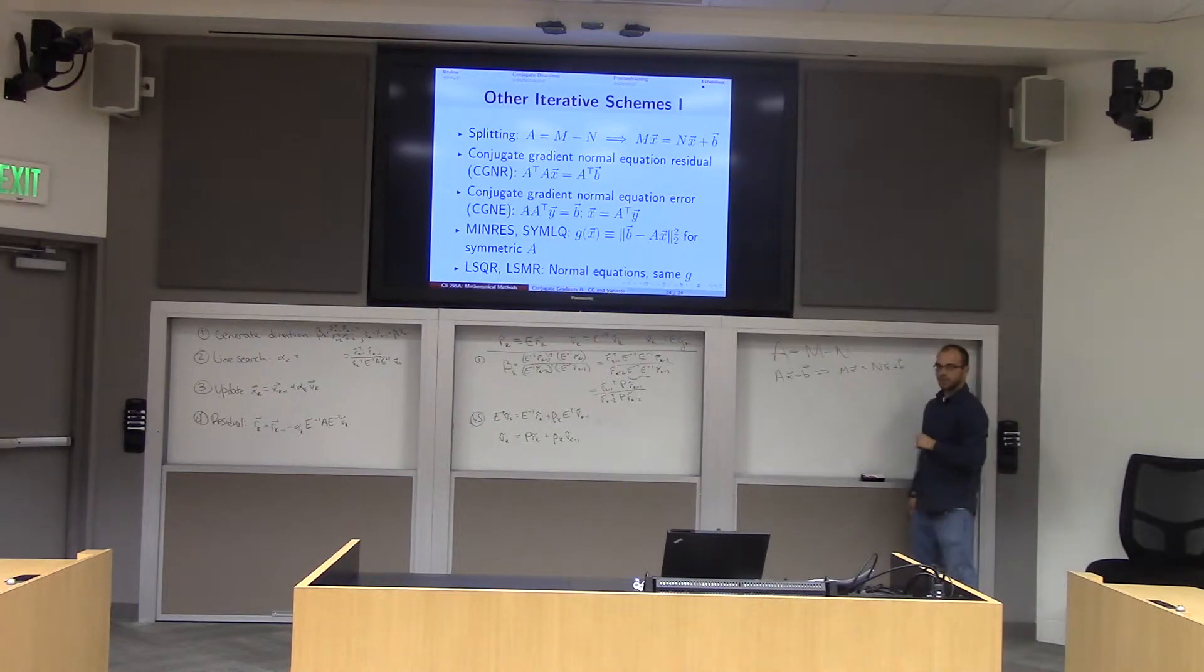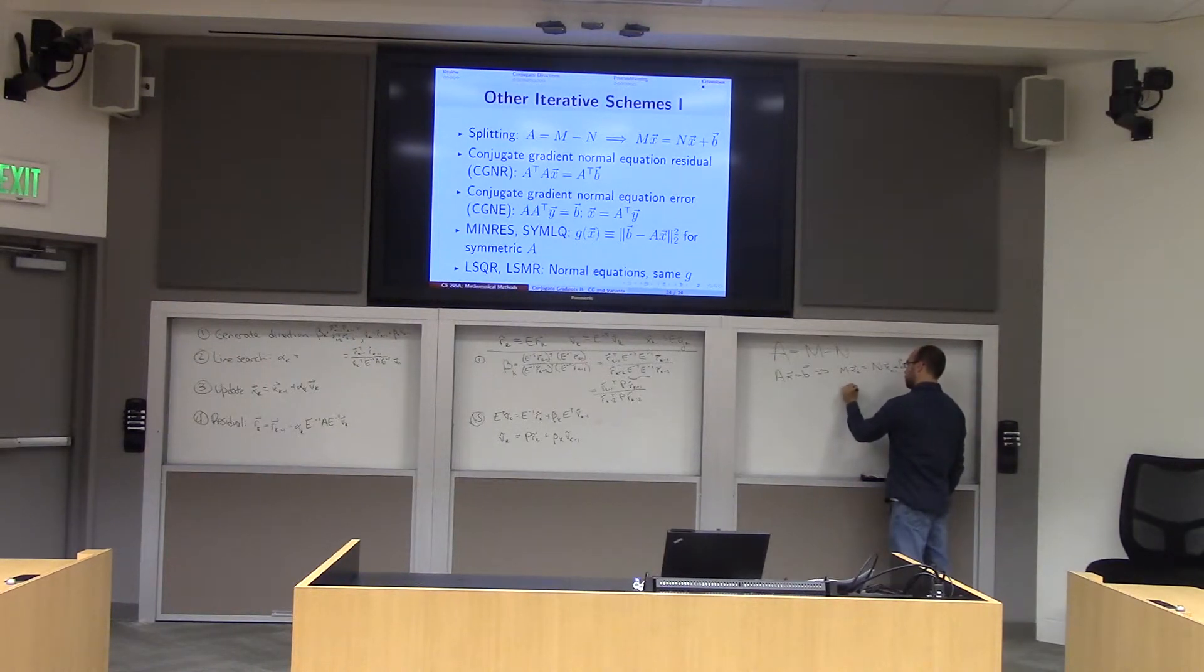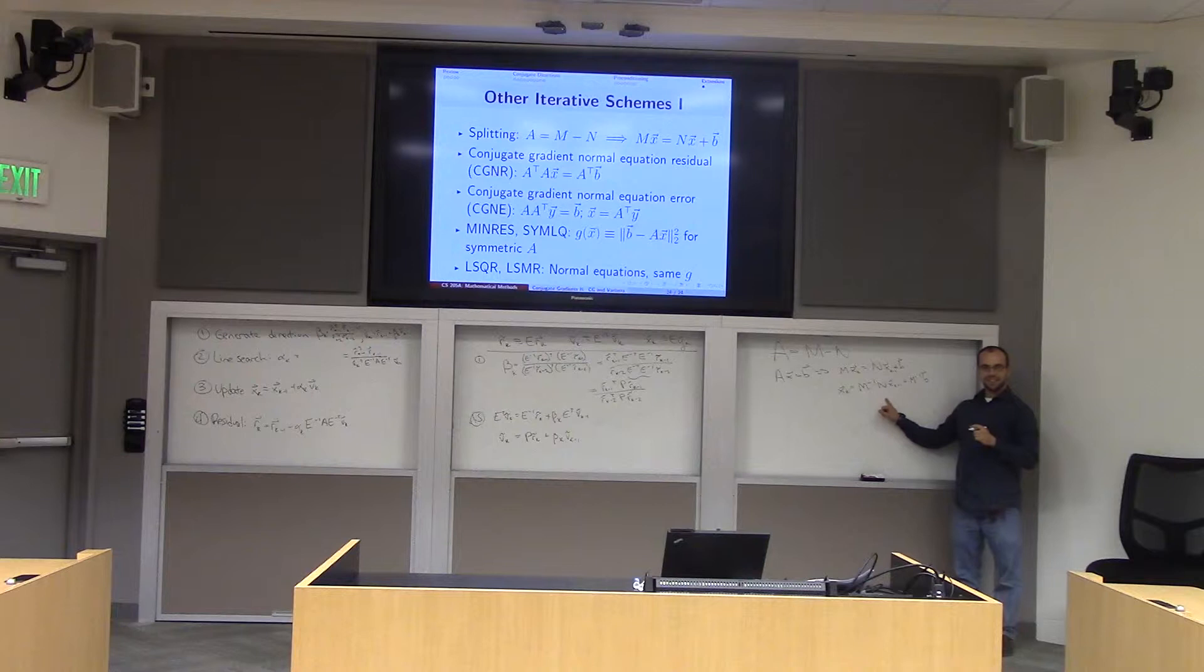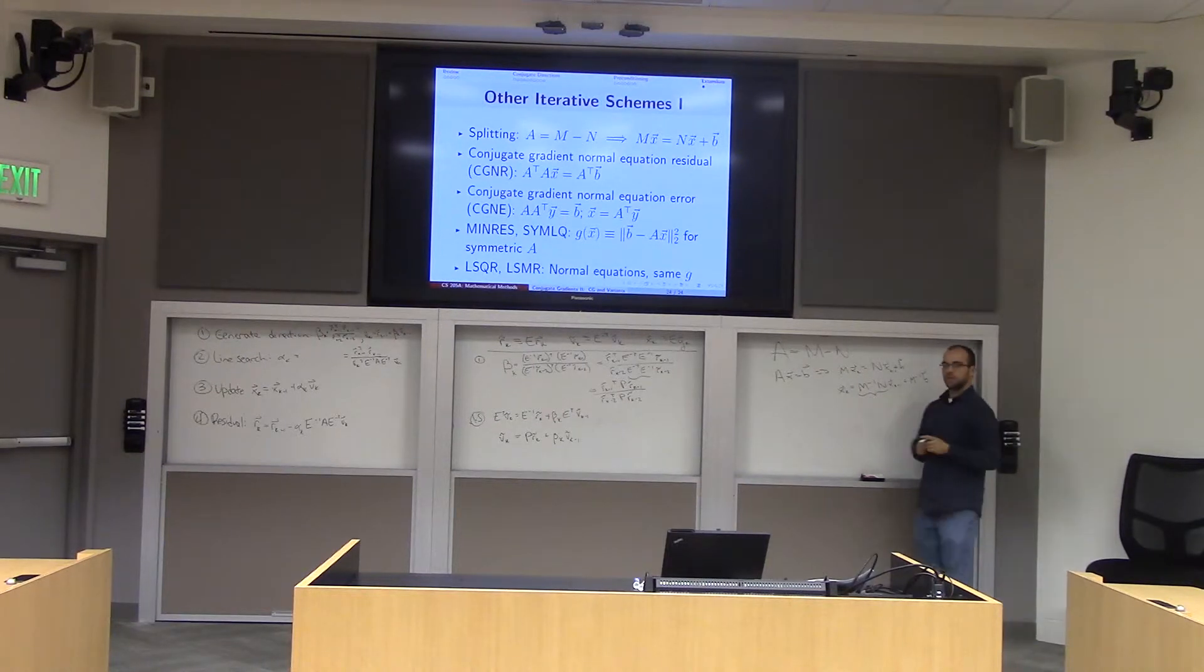And so what these guys do is sort of similar to the fixed point iteration we talked about before, where we're going to solve this system MXK equals NXK minus 1 plus B. In other words, you can say XK equals M inverse NXK plus 1 plus M inverse B. This is a fixed point iteration. Actually, we proved in class, when does this thing converge? Well, what you have to do is look at the eigenvalues of this matrix, M inverse N, and make sure that their absolute values are all less than 1. And when it does, this strategy converges.